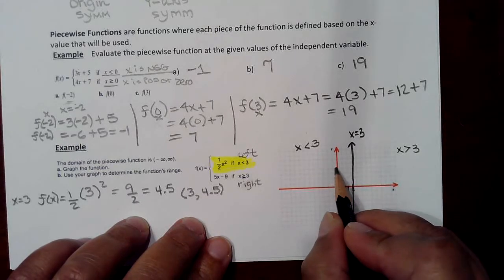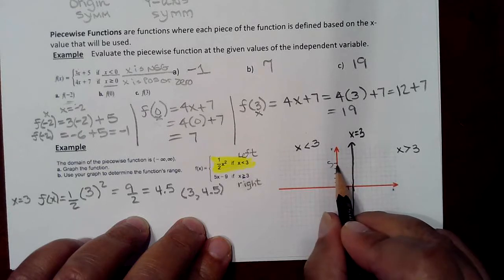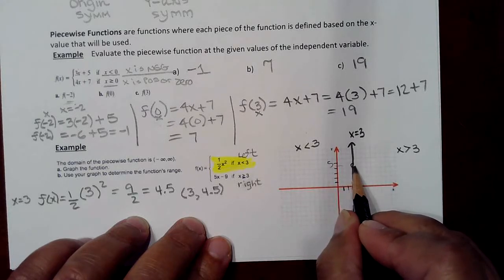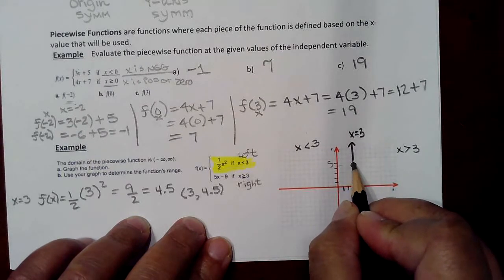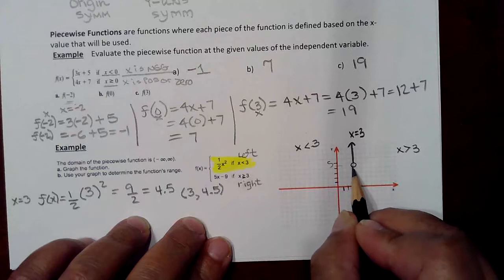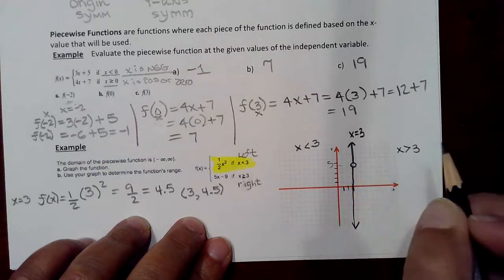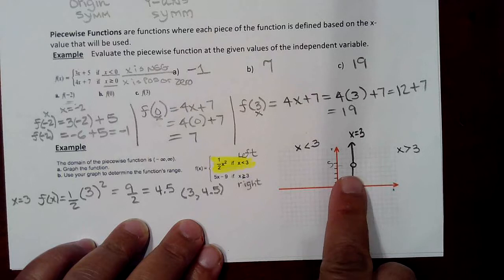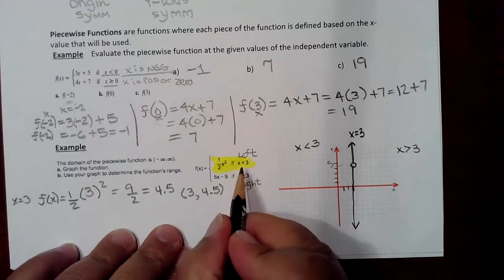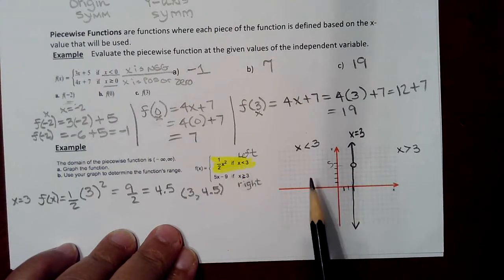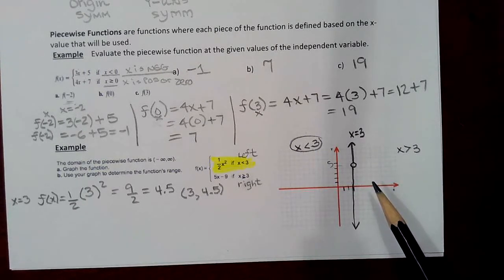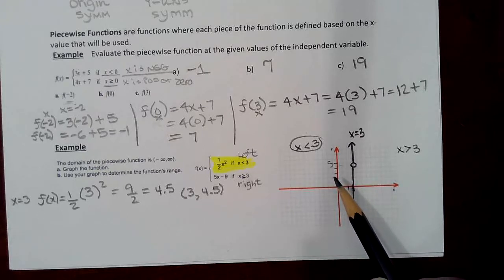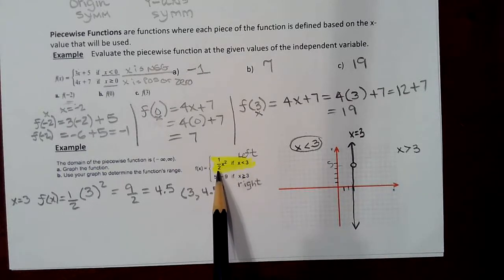Going to the graph: x equals three, y equals 4.5, so the open circle goes right there. Then I'll pick additional x values less than three to trace the full parabolic shape on the left side of the wall, knowing the square on x confirms it's a parabola.